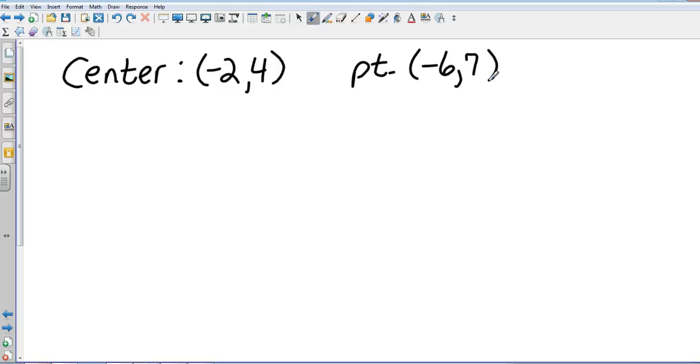I will need to find the distance from the center to that point to find out what my radius is. The distance formula tells me that I'm going to take x2 minus x1, so that's going to be negative 6 minus negative 2 squared, plus y2 minus y1, which is going to be 7 minus 4 squared.